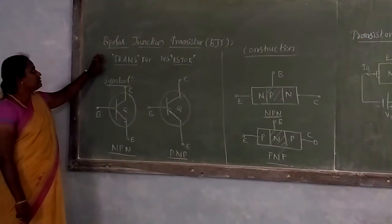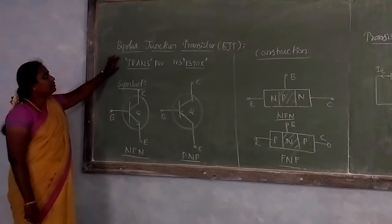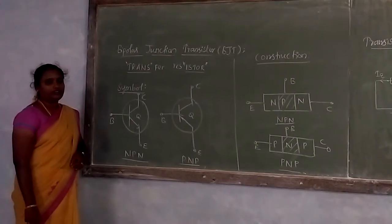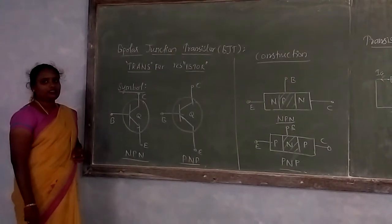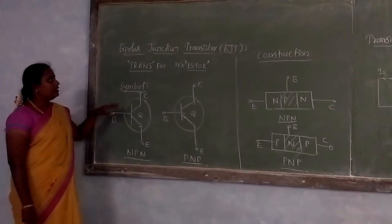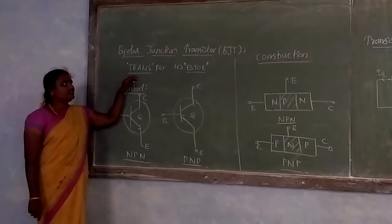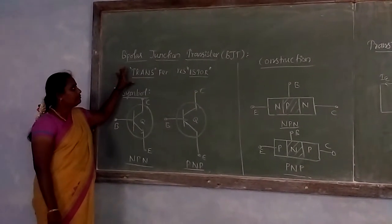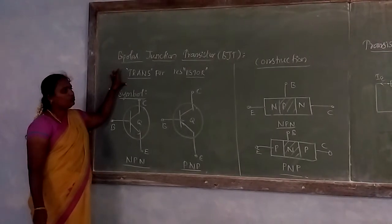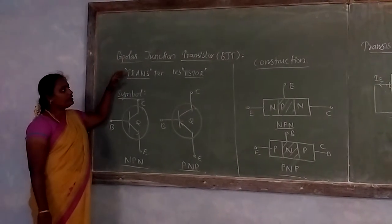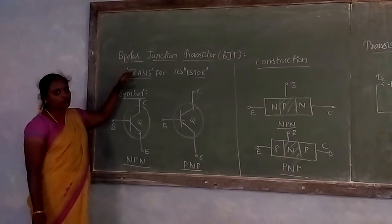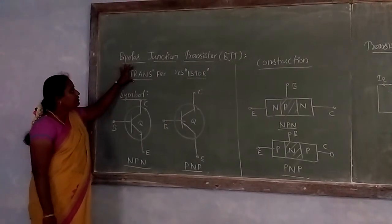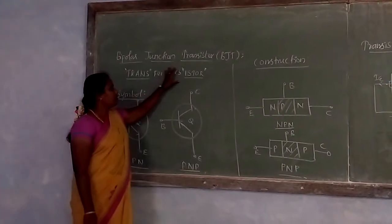Today we are going to discuss the topic of BJT. BJT is a bipolar junction transistor. A transistor is an electronic device used to transfer the signal from a lower resistance path to a higher resistance path, so it is called transfer resistance.